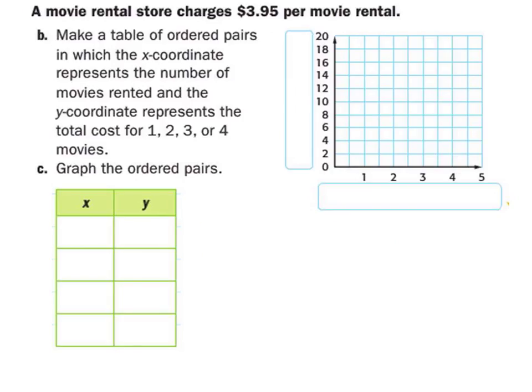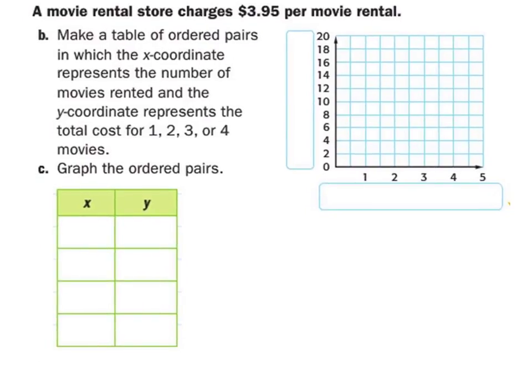Make a table, it's already done. Graph ordered pairs, done. Now here's the thing, labeling the x is just as easy as reading the problem. For example, the y-coordinate represents the total cost, so is there any doubt on what the y-coordinate is? No. What is the y-coordinate? Yeah, I know some of you want to say movies, but it told you y-coordinate represents cost, so label it cost. What's the x-axis then? Movies. The x-coordinate represent the number of movies. Movies. Good job Emily.